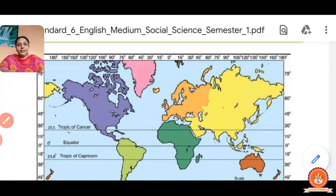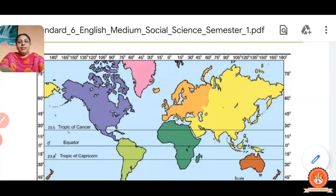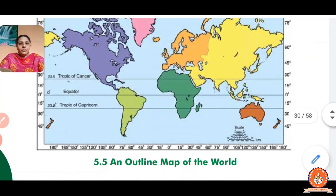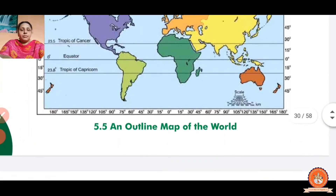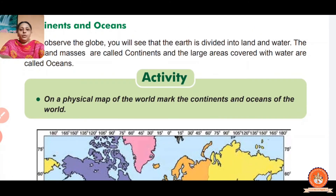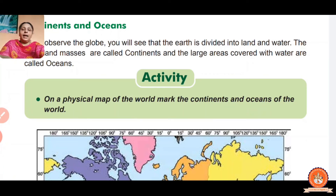There are seven continents on the globe. The first is Asia — we live in India, which is in Asia. Second is Europe, then Africa, North America, South America, Australia, and Antarctica. And there are four oceans: Pacific Ocean, Atlantic Ocean, Indian Ocean, and Arctic Ocean.